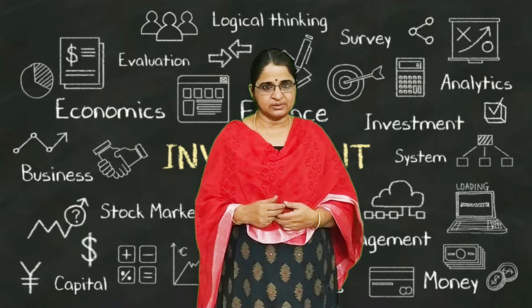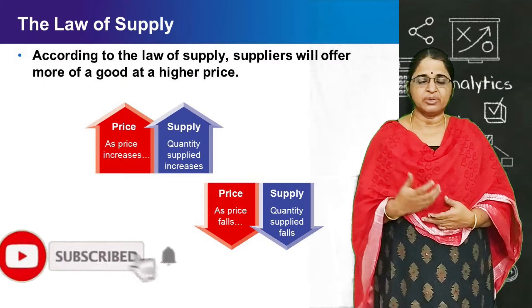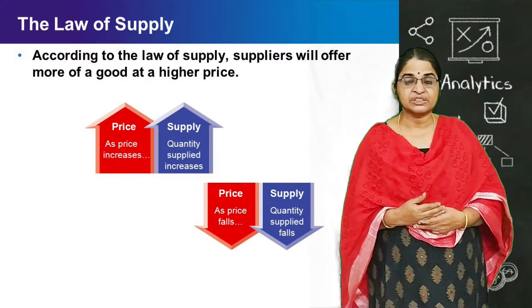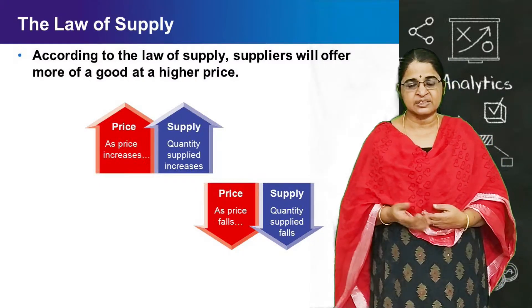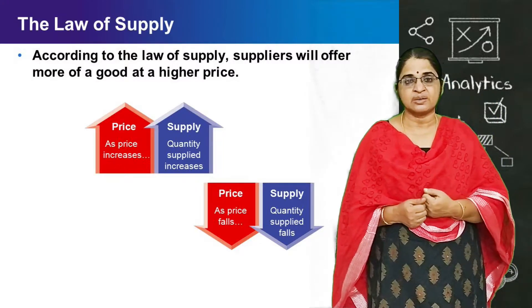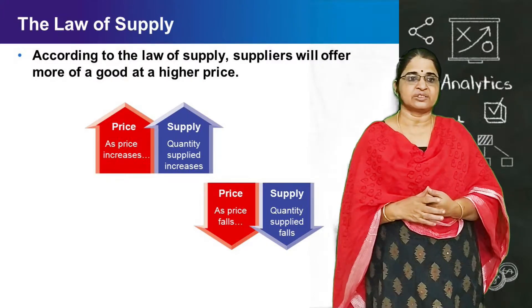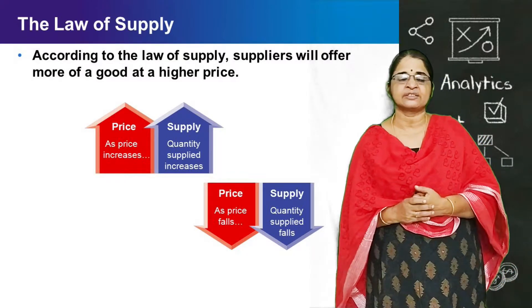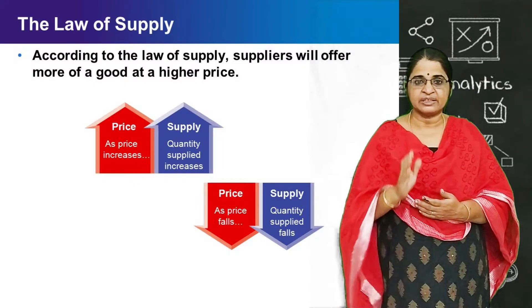Today we can discuss the law of supply. What do you mean by law of supply? There exists a positive relationship between supply and price. When price increases, supply also increases. When price decreases, supply decreases. We can say that other things remaining unchanged, when the price of a commodity rises, its quantity supplied also rises and vice versa.